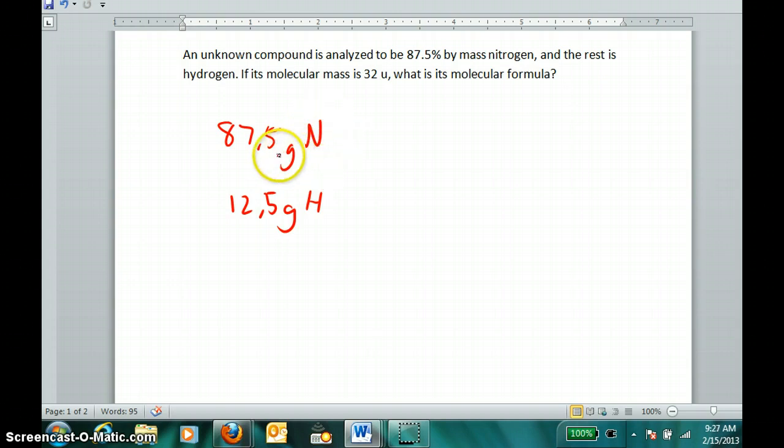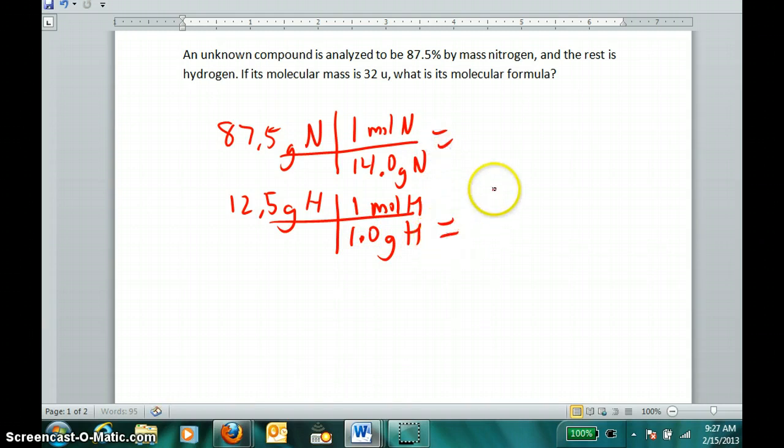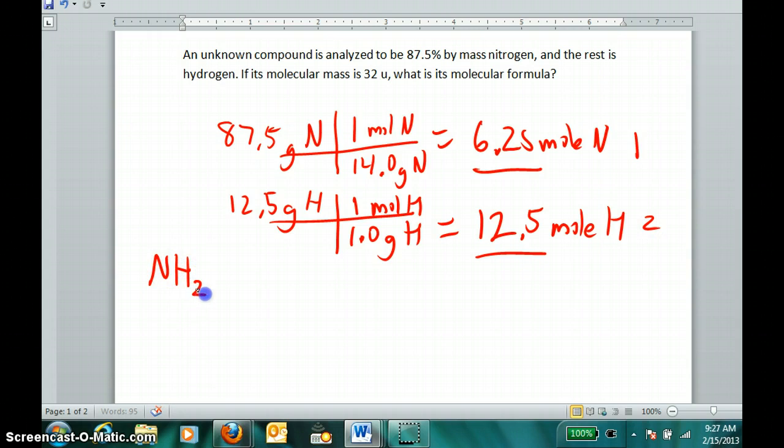I can then find my empirical formula because empirical formula is the lowest whole number ratio of atoms. If I convert masses to moles, I'll be talking about actual numbers of atoms. One mole of nitrogen atoms is 14 grams and one mole of hydrogen atoms is 1 gram. I have 12.5 moles of hydrogen and 6.25 moles of nitrogen. I can readily see that the lowest whole number ratio is 1 to 2, meaning I have an empirical formula of NH2.